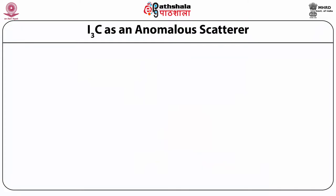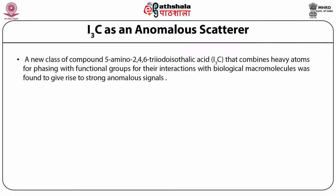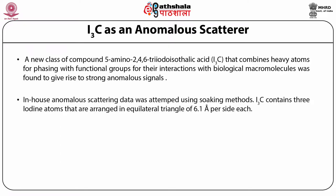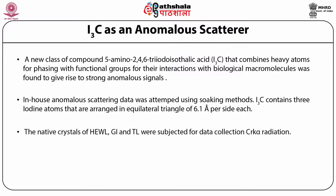As a further attempt, I3C was used as an anomalous scatterer. I3C is 5-amino-2,4,6-tri-iodo-isophthalic acid, which combines heavy atoms for phasing — it has 3 iodine atoms — with functional groups for interaction with biological macromolecules. It is found to give rise to strong anomalous signals, and in-house anomalous scattering data were obtained using this compound. The three iodine atoms are arranged in an equilateral triangle of 6.1 Å per side. The native crystals of hen egg white lysozyme, glucose isomerase, and thermolysin were subjected to data collection with I3C incorporated.